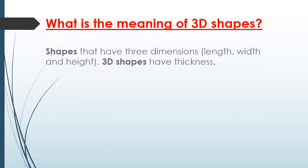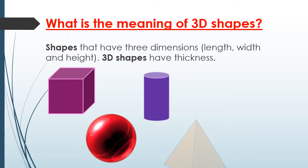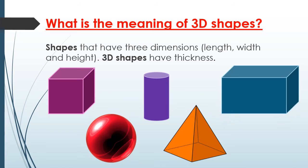Good morning, Primary 2! Today we are going to talk about solids or 3D shapes. What is the meaning of 3D shapes? These are shapes that have three dimensions: length, width, and height. 3D shapes have thickness.